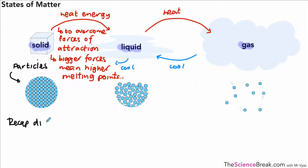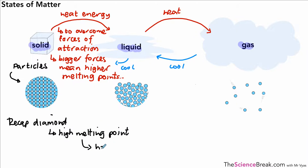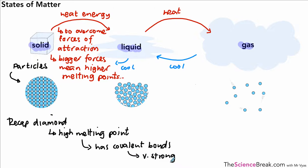Just to highlight the key points about melting and boiling: we remember that diamond has a very high melting point. The reason is that it has covalent bonds between the particles — in this case carbon atoms — and covalent bonds are very strong, so a lot of heat energy is needed to melt something like diamond.